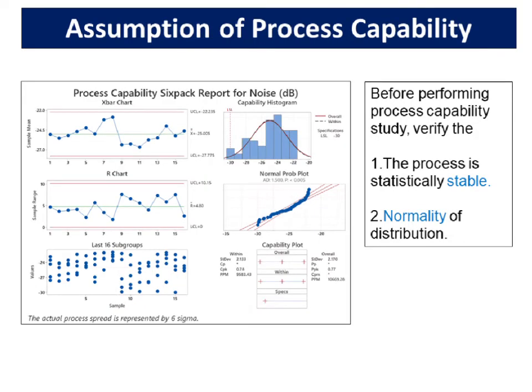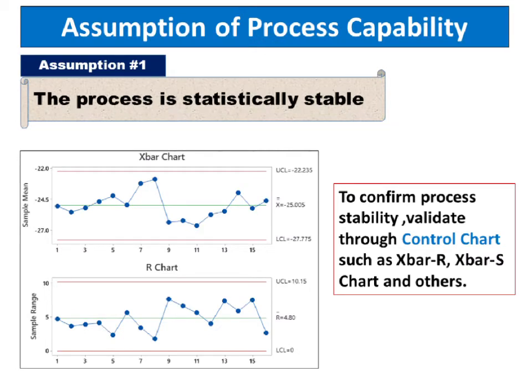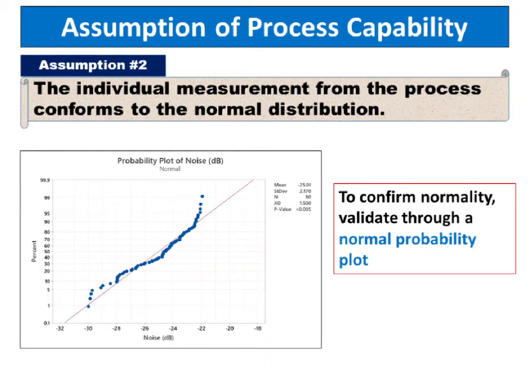Before performing a process capability study, verify whether the process is statistically stable and check the normality of the distribution. Validate through control charts such as X-bar R, X-bar S chart and others. The second assumption is that the individual measurements from the process conform to the normal distribution. To confirm normality, validate through a normal probability plot.